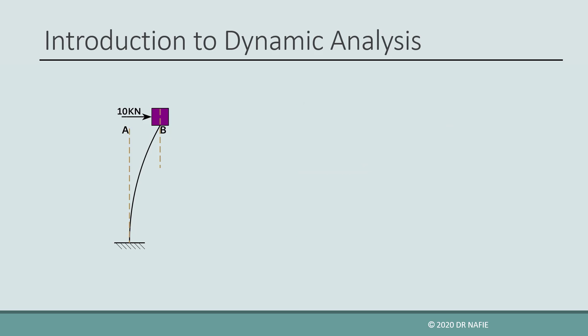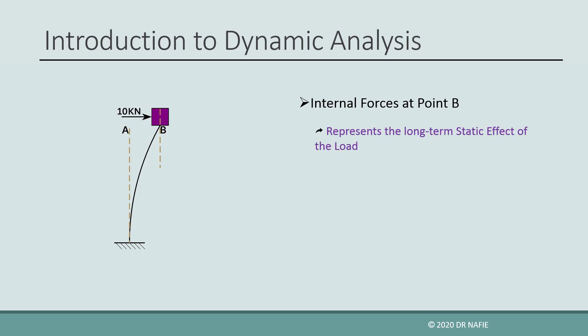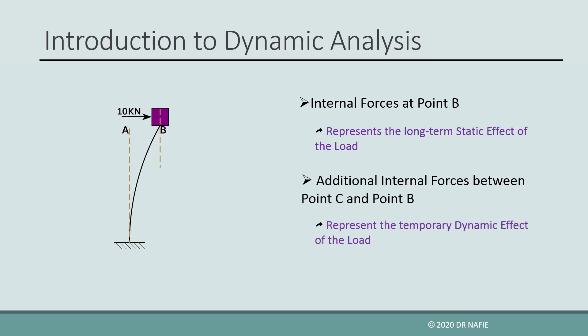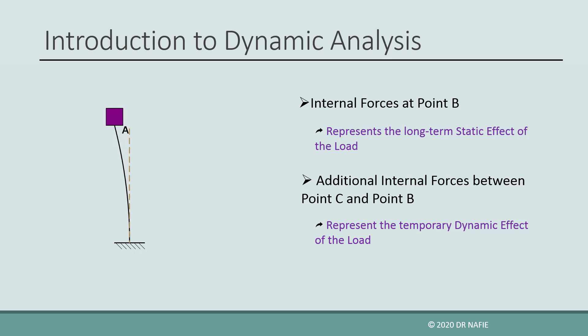The internal forces generated in the cantilever at point B represent the long-term static effect generated in the structure. The additional value of the internal forces due to the increase of deflection from point B to point C represents the temporary dynamic effect due to the sudden application of the force. If the force is suddenly removed, the cantilever will vibrate in free vibration around point A until the motion is damped out and the cantilever stops at the undeflected position at point A.